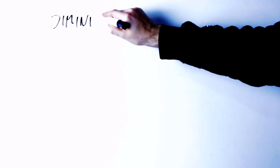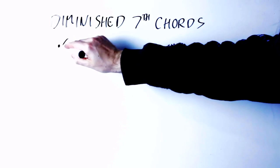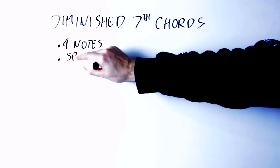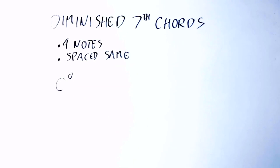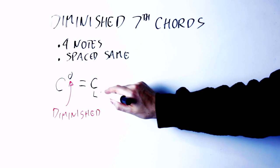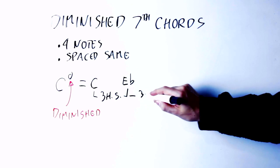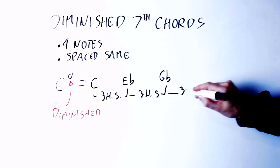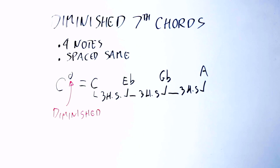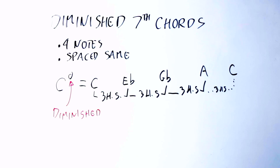First of all, you need to know about diminished seventh chords. Diminished seventh chords are chords of four notes, all spaced three half-steps from each other. For instance, a C diminished chord contains the note C, then E flat — three half-steps above that — then G flat, then A. Notice that if you go three half-steps above A, you find C again. Those chords are super easy to play.